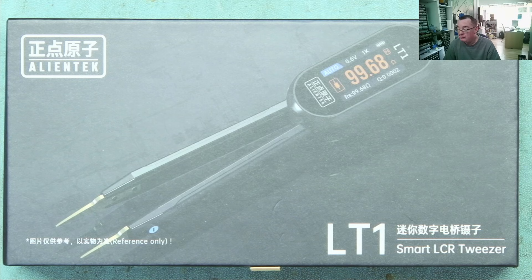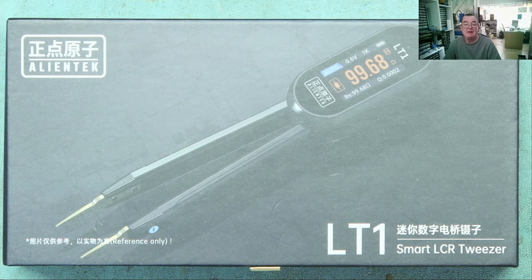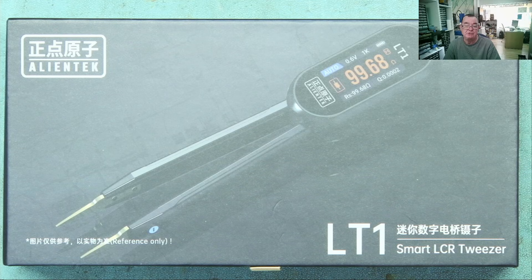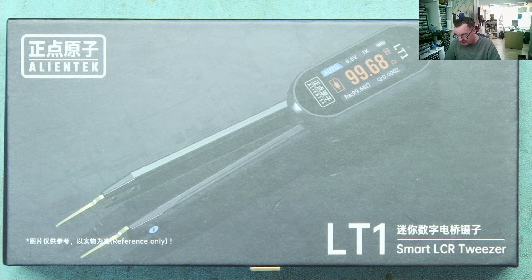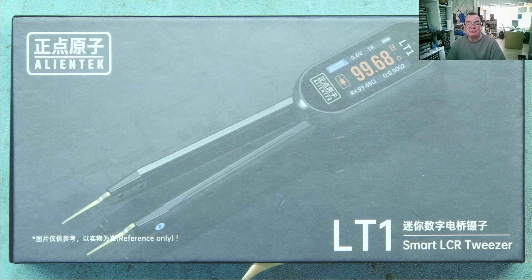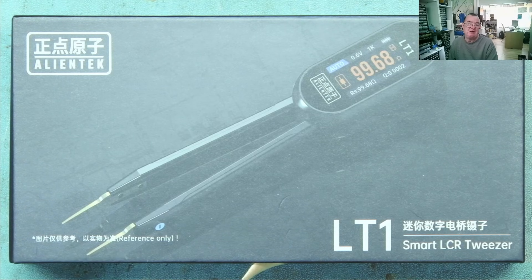They usually have an auto range which should auto-detect the components. It tends to confuse small value inductors with low value resistors, but other than that works quite well. These measure diodes as well. They're really meant for working on surface mount devices and PCBs. This one is slightly different because it has some extra features I've not seen on LCR tweezers before.